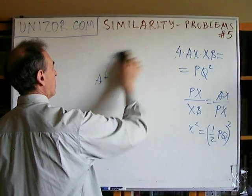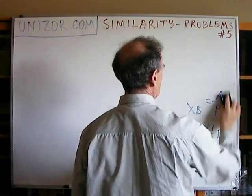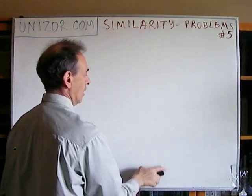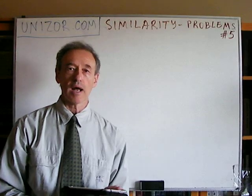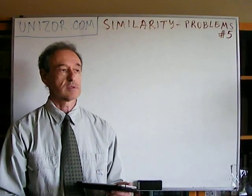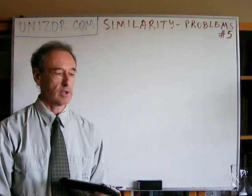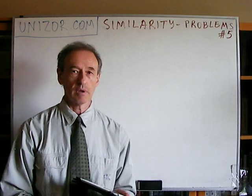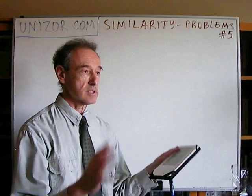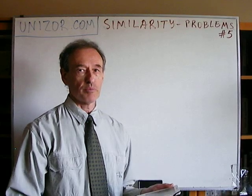Notice that in this and all other problems related to similarity, all I have to do is find or construct a couple of triangles — usually right triangles — where some angle is common or congruent, which means they are similar, and then just use the proportionality of the sides. Basically, just find something which is similar and use the proportionality.